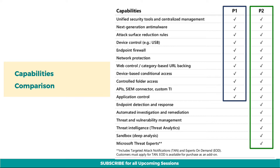Automated investigation and remediation provides automatic investigation and remediation capabilities, and helps reduce the volume of alerts in minutes at scale — available in Plan 2 only. Plan 2 also has an inbuilt capability of threat and vulnerability management, that provides a risk-based approach to the discovery, prioritization, and remediation of endpoint vulnerabilities and misconfigurations. Threat intelligence and analytics for investigation is also a feature only available in Plan 2.